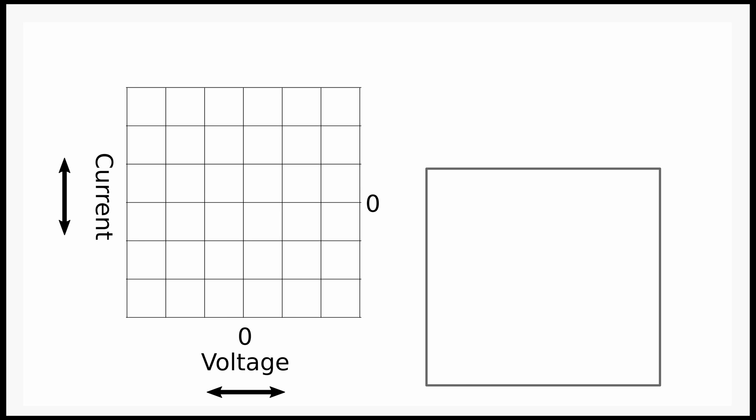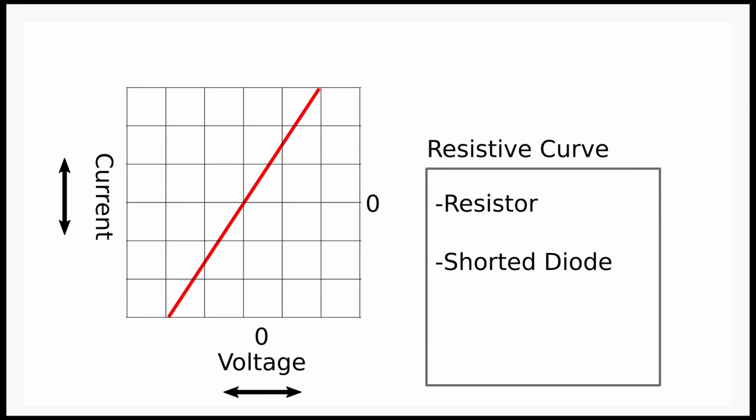Notice the Y-axis, up and down, represents current with zero amps in the center. As current flows through the load, the trace will graph a vertical deflection.